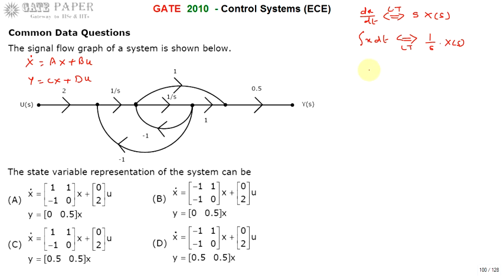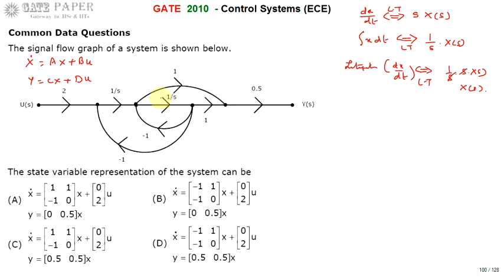If we take the integration of the differentiation of x, in the Laplace domain that is (1/s)·s·X(s), the s terms cancel and we simply get X(s). So integration and differentiation are opposites and cancel each other out. Wherever 1/s is indicated in the signal flow graph, integration is taking place. Now we proceed with variable assignment.